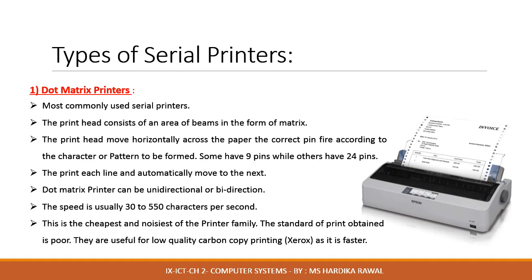The correct pins fire according to the character or pattern to be formed. Some have nine pins and the better ones have 24 pins. They print each line and automatically move to the next line. The dot matrix printer can be uni-directional or bi-directional. The speed is usually 30 to 550 characters per second. This is the cheapest and noisiest printer of the family; the standard of print obtained is very poor. These printers are cheap to run and relatively fast, and are useful for low quality carbon copy printing.